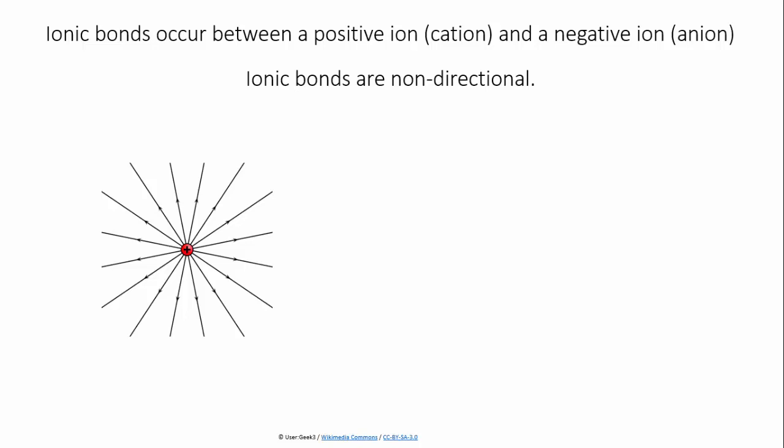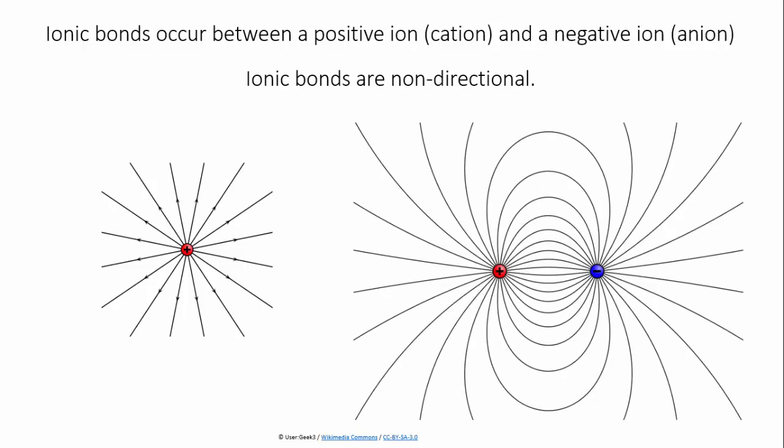Ions are charged. Because of this charge, an electric field exists around the ion which spreads out evenly in all directions, getting weaker as it gets further away from the ion. When the field of a positive ion interacts with that of a negative ion, an electrostatic attraction occurs and they're drawn together, and this is the basis of an ionic bond.